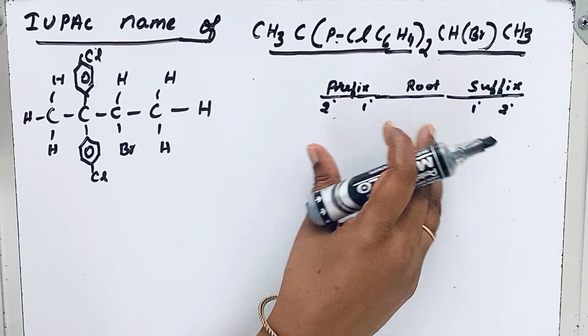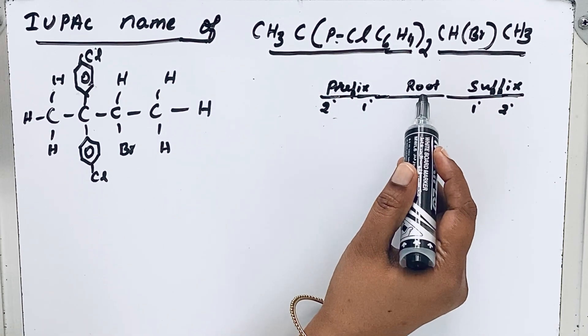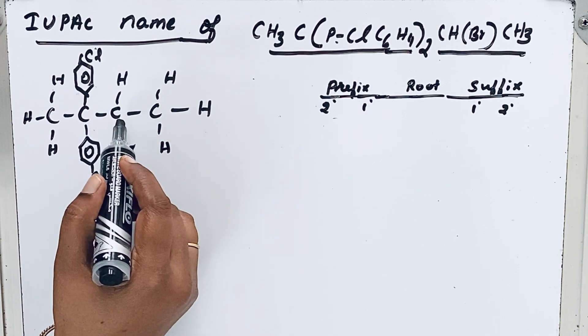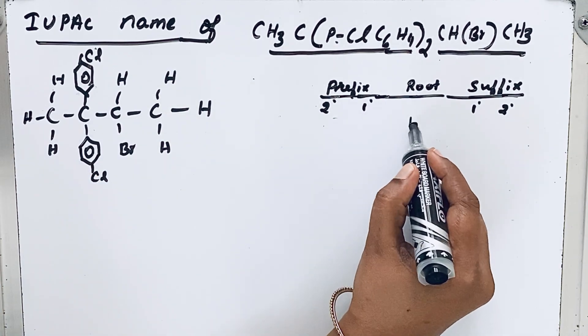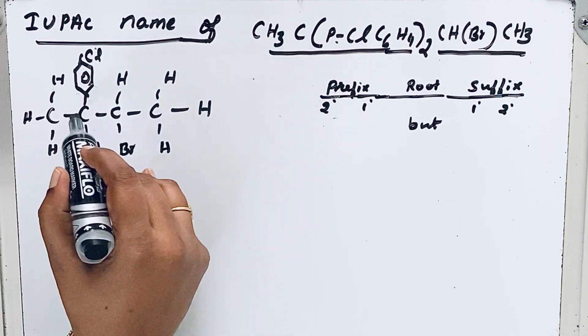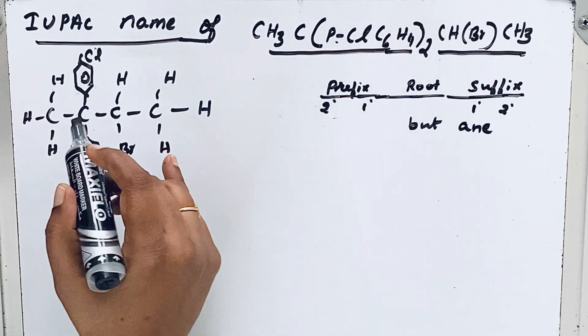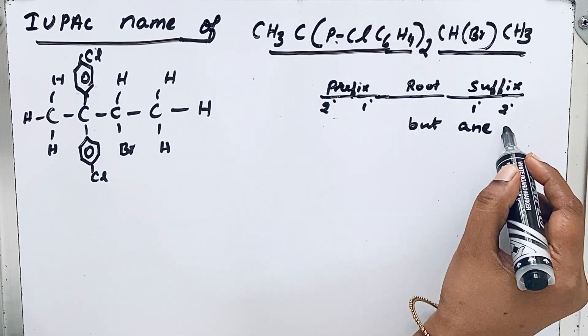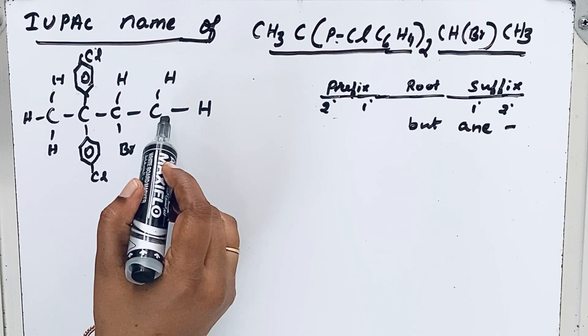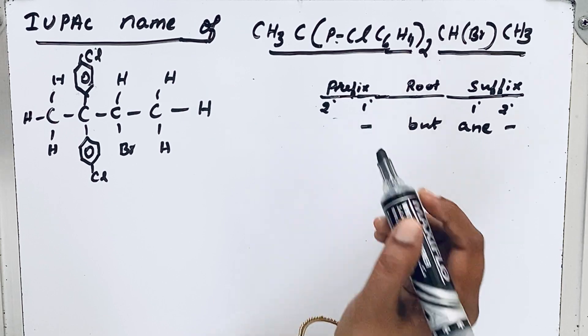This format will help you to write that IUPAC name correctly. So first let us find that root word. Here you can see that four carbon parent chain is present, so the root is but. Then there is no double or triple bond, only single bond, so the primary suffix is ane. There is no functional group, so secondary suffix is absent. This parent chain does not contain any cyclic compounds, so that primary prefix cycle is absent.